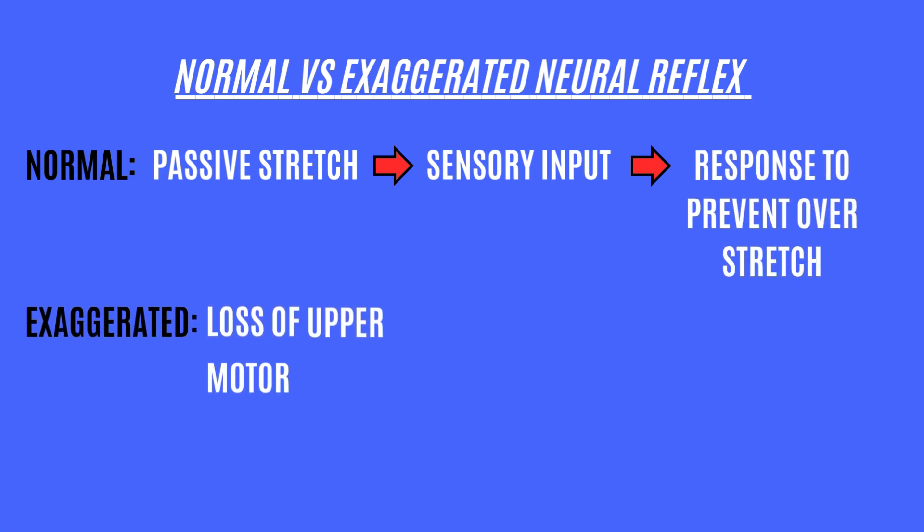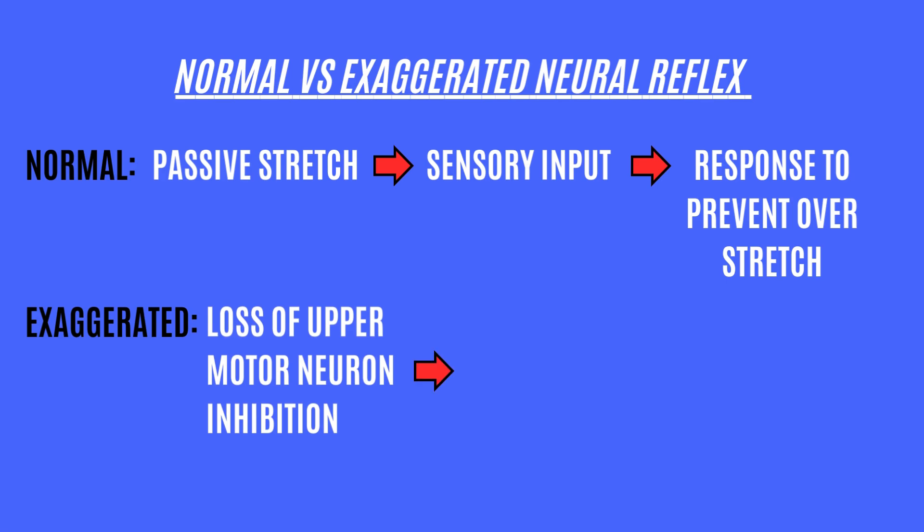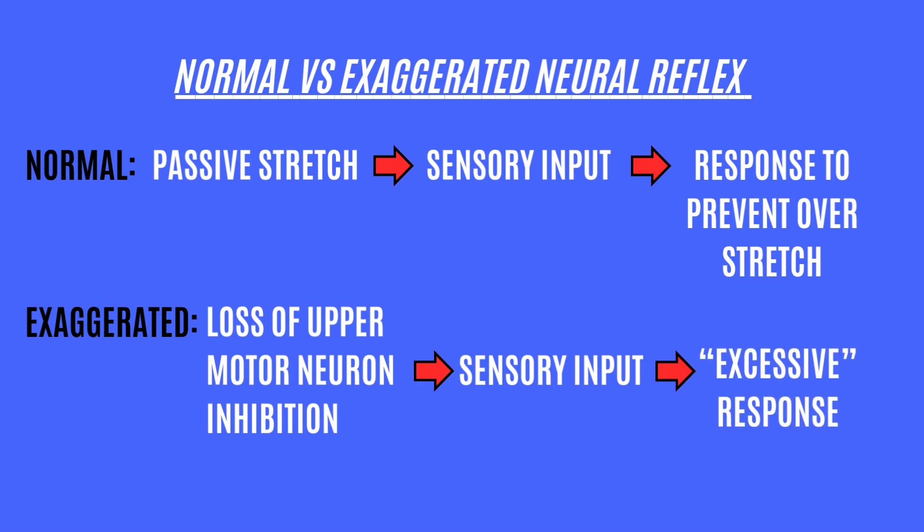However, due to the loss of upper motor neuron net inhibition, there will be excitatory effects happening in this stretch reflex. When the net dis-inhibition is gone, there will be excessive muscle activation even for simple or small amplitudes of movement.